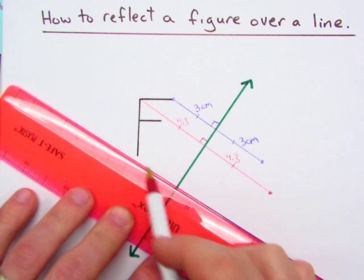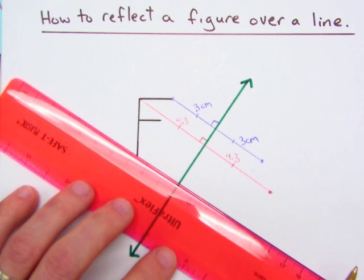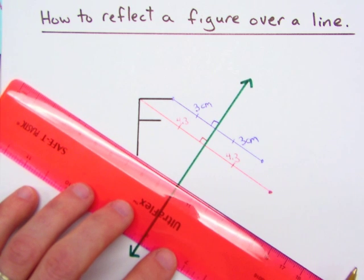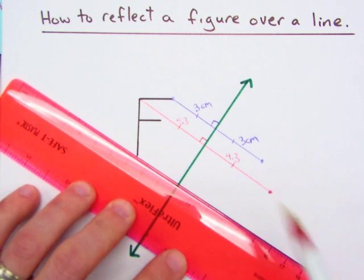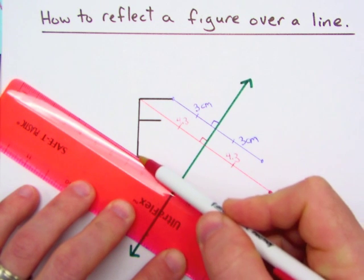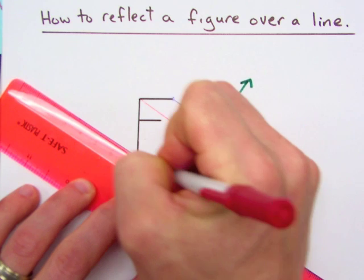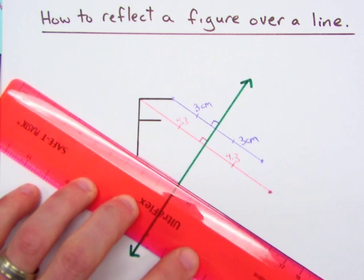So we can go down and get the bottom of our F. Align your ruler perpendicular. Measure the distance. So this is about 2.7 centimeters.